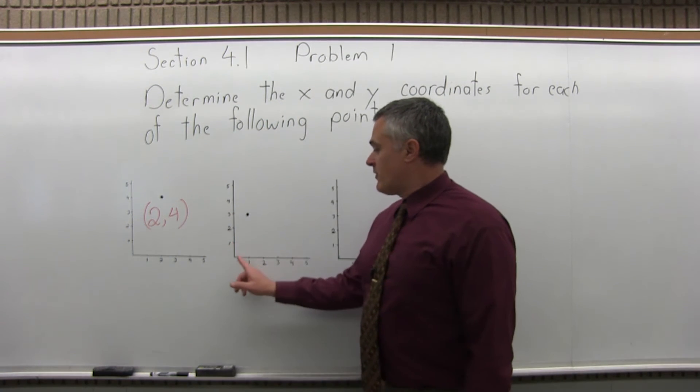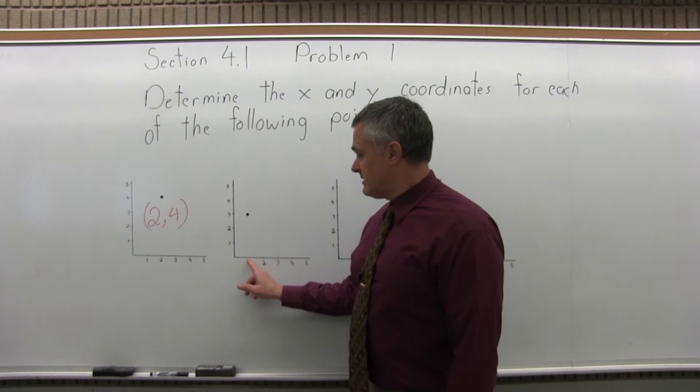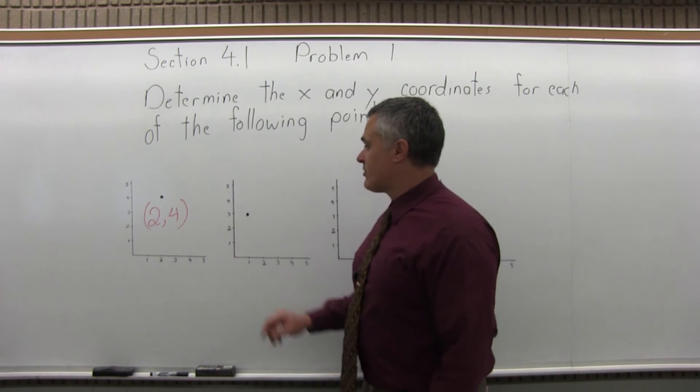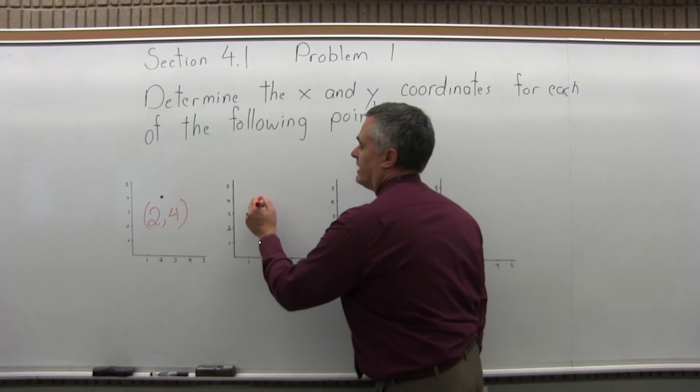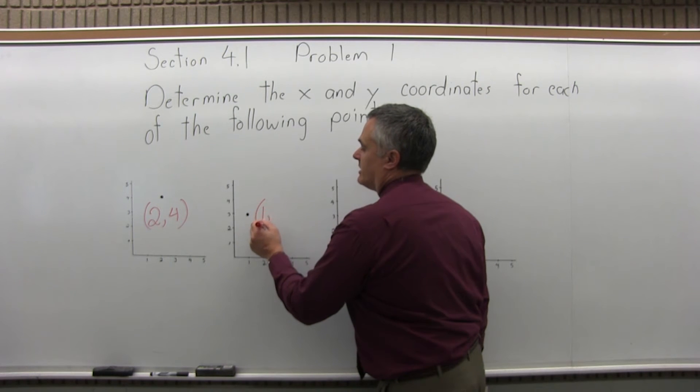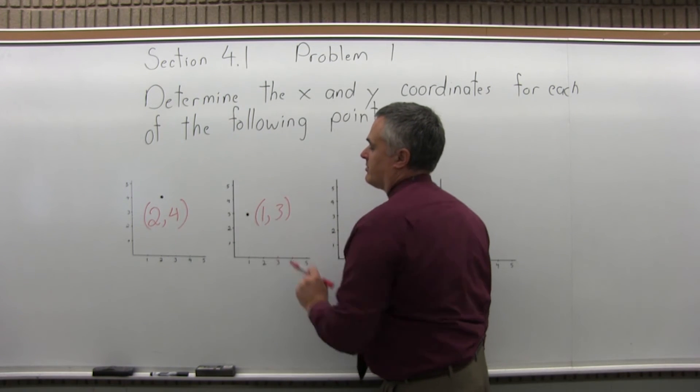The next point, if you look first how far over you go, it seems that we're over 1 and up 3. So this point, the second point, has the coordinates 1 comma 3, over 1 and then up 3.